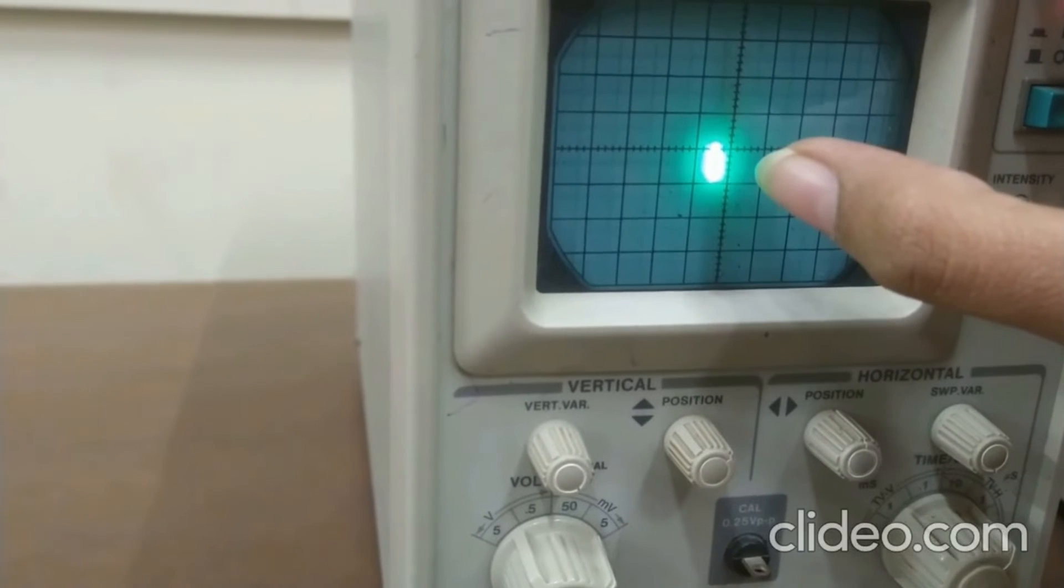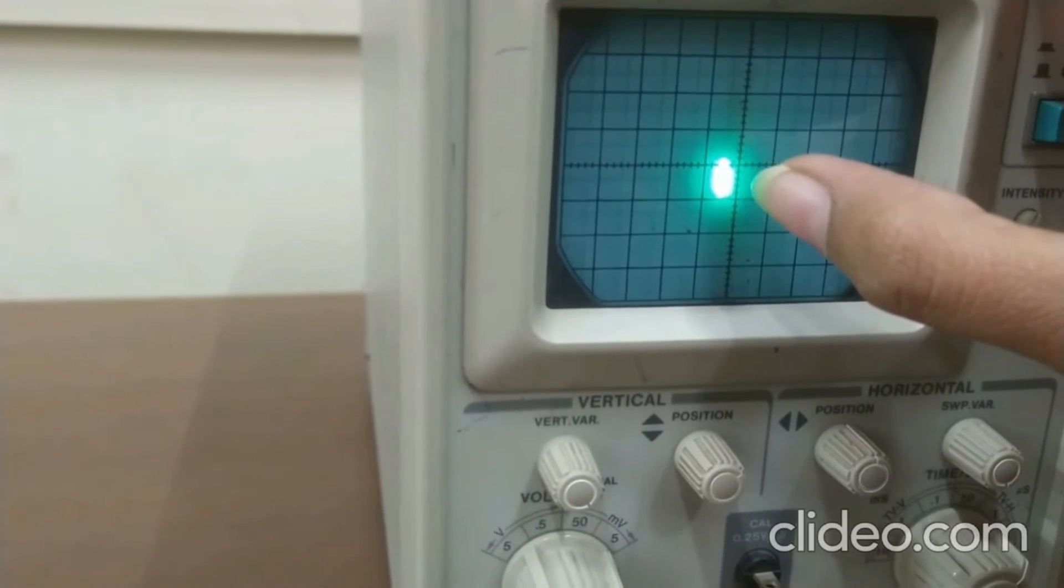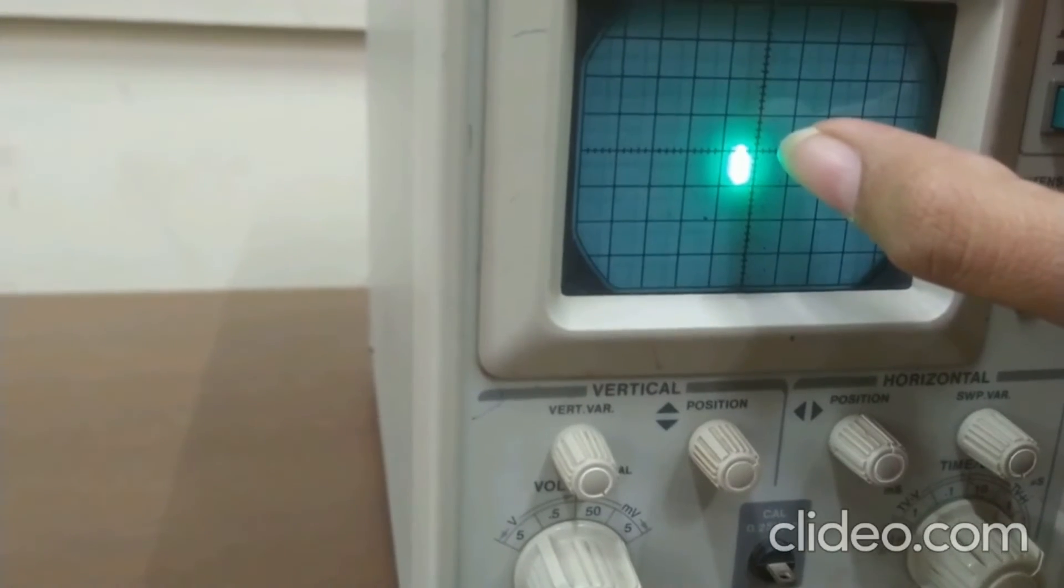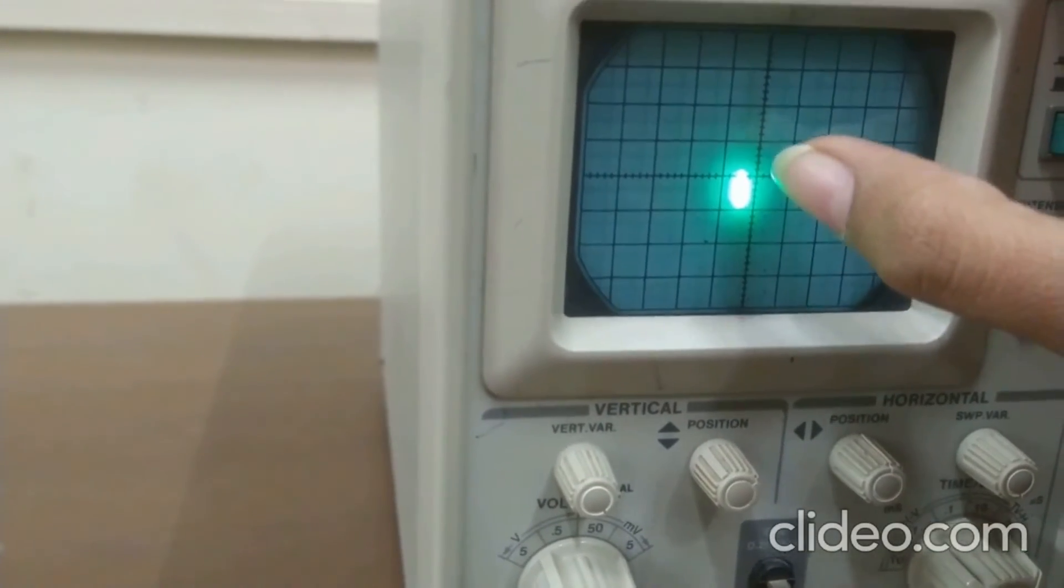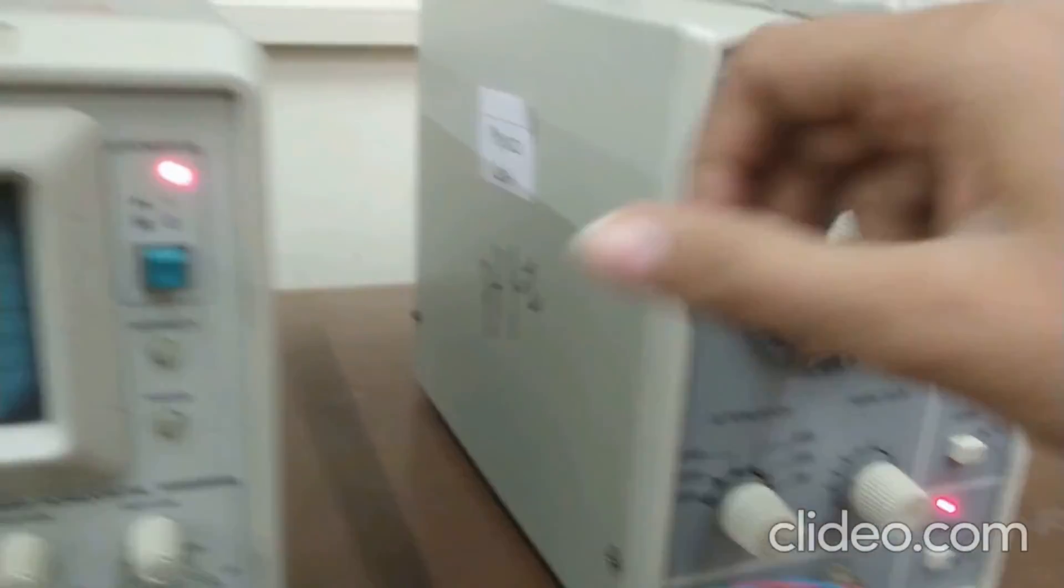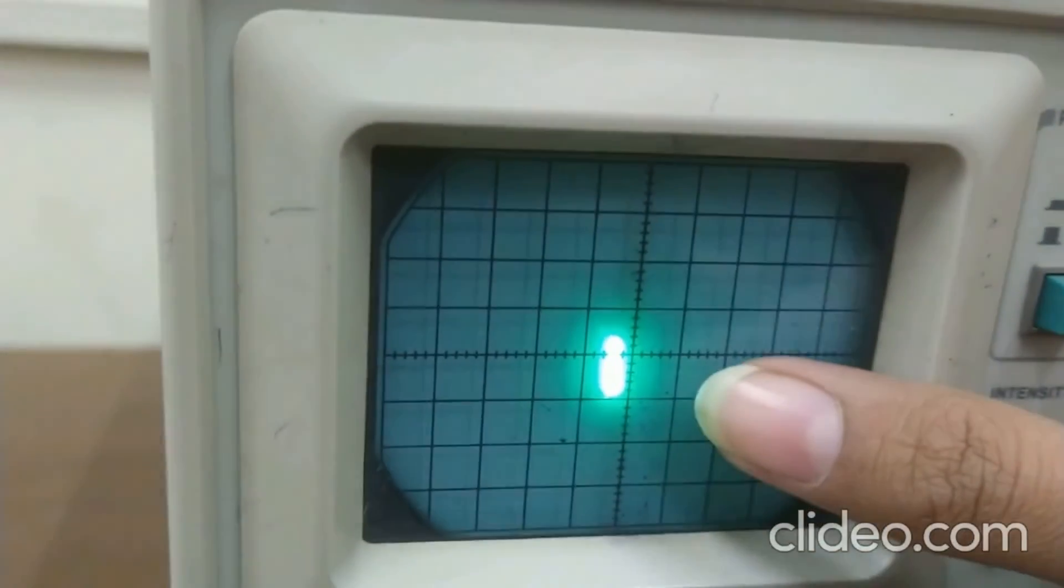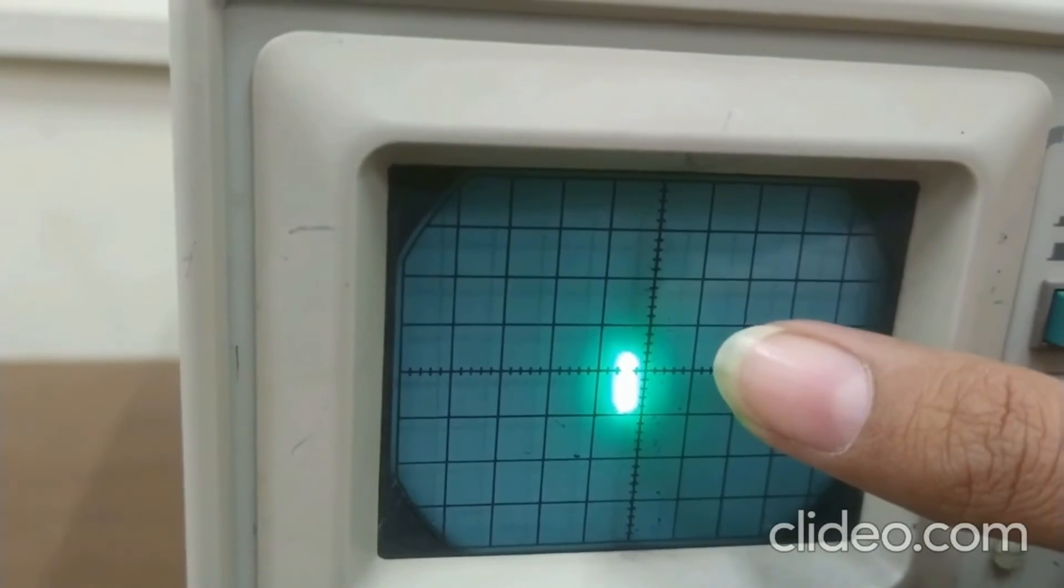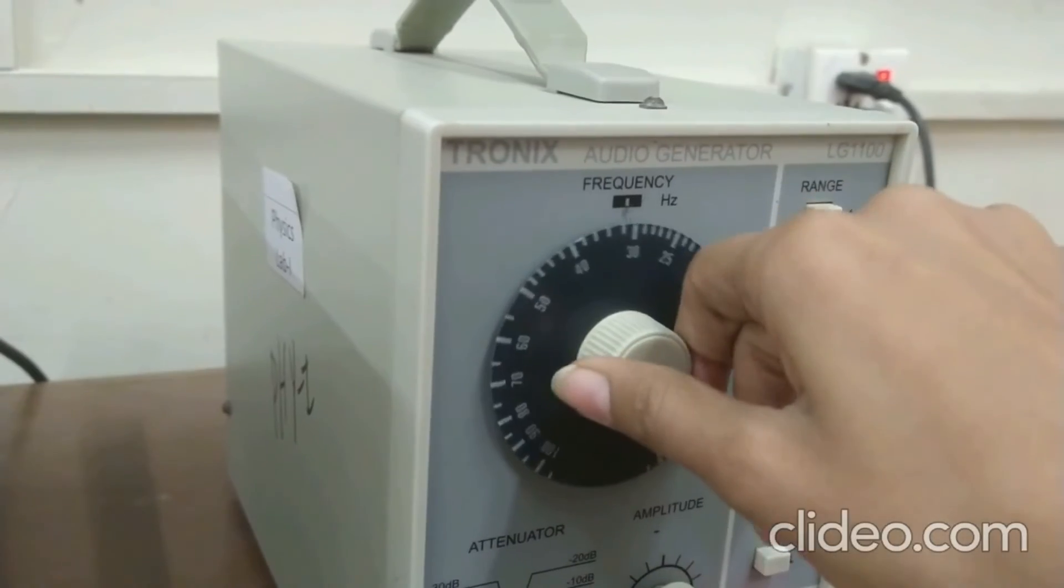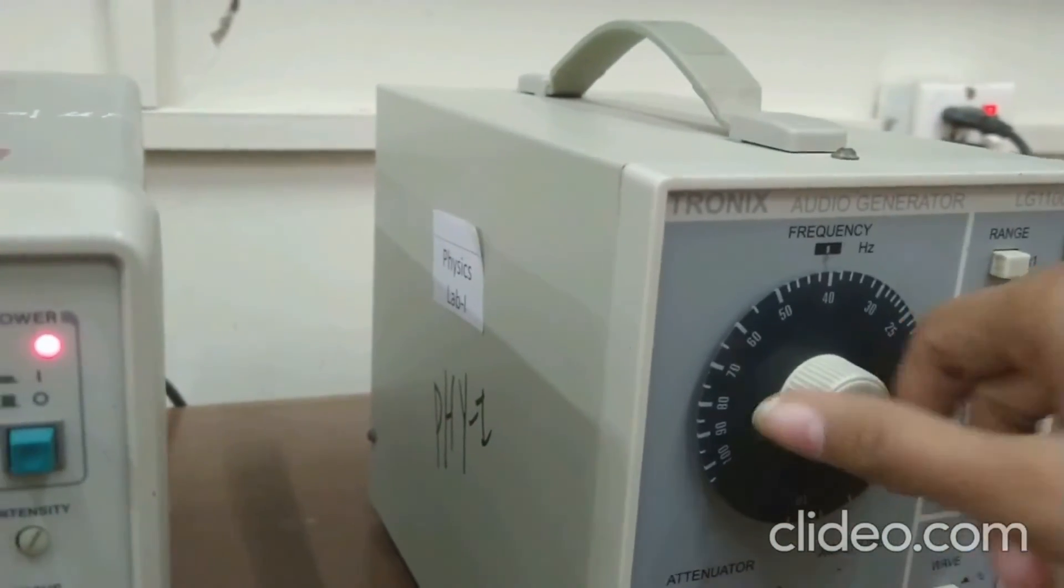When the square wave has 5 divisions. Now, you can see the vertical line. And on 10 kHz, we have amplitude 6. Now, on 15 kHz, the amplitude is increased. And now, it is around 8. That's how you will take the readings. And continue the procedure.